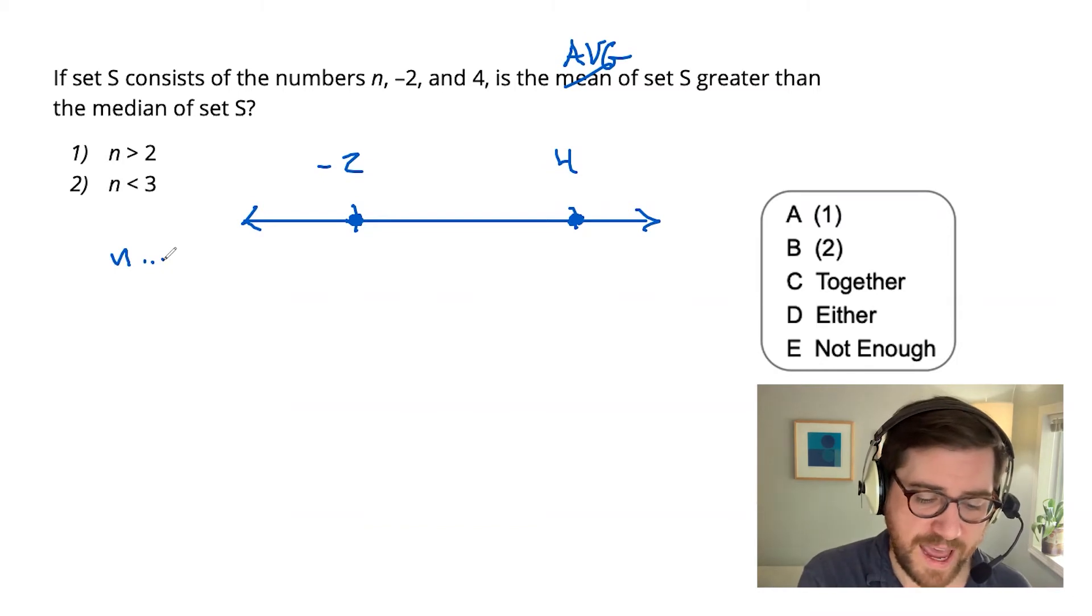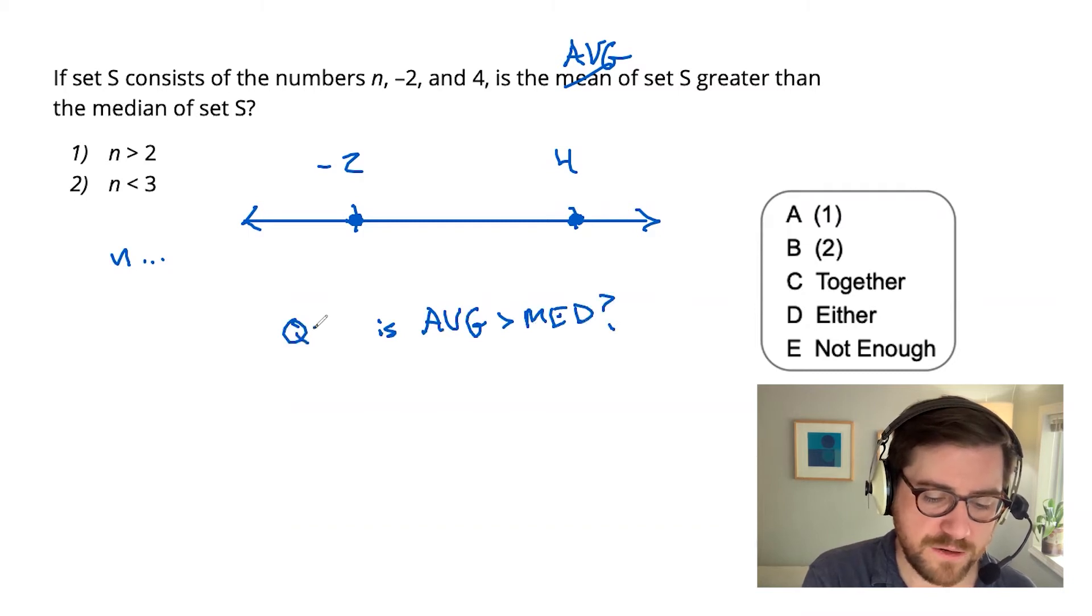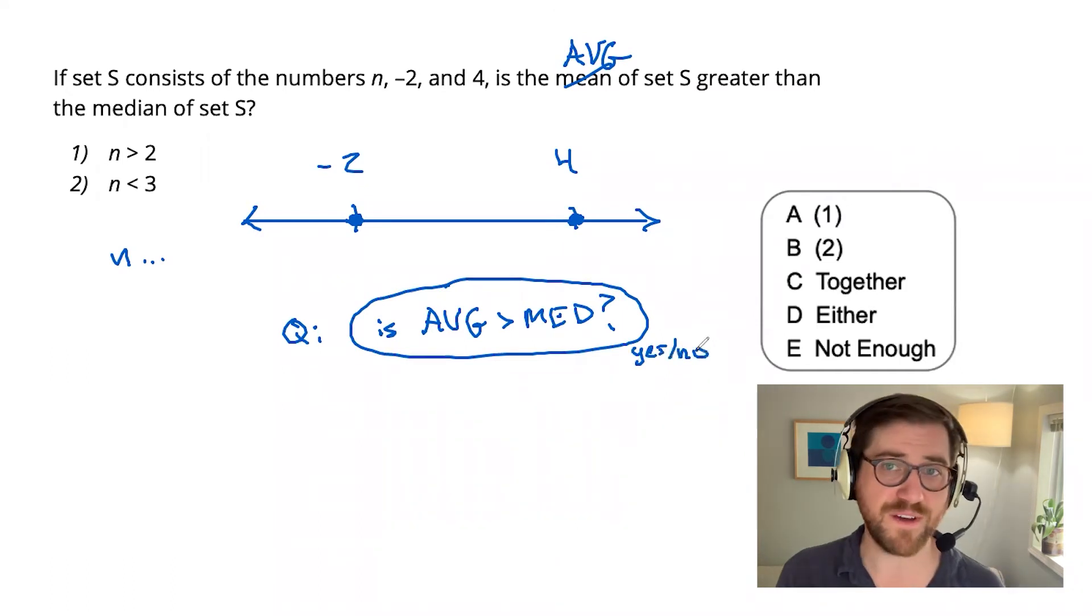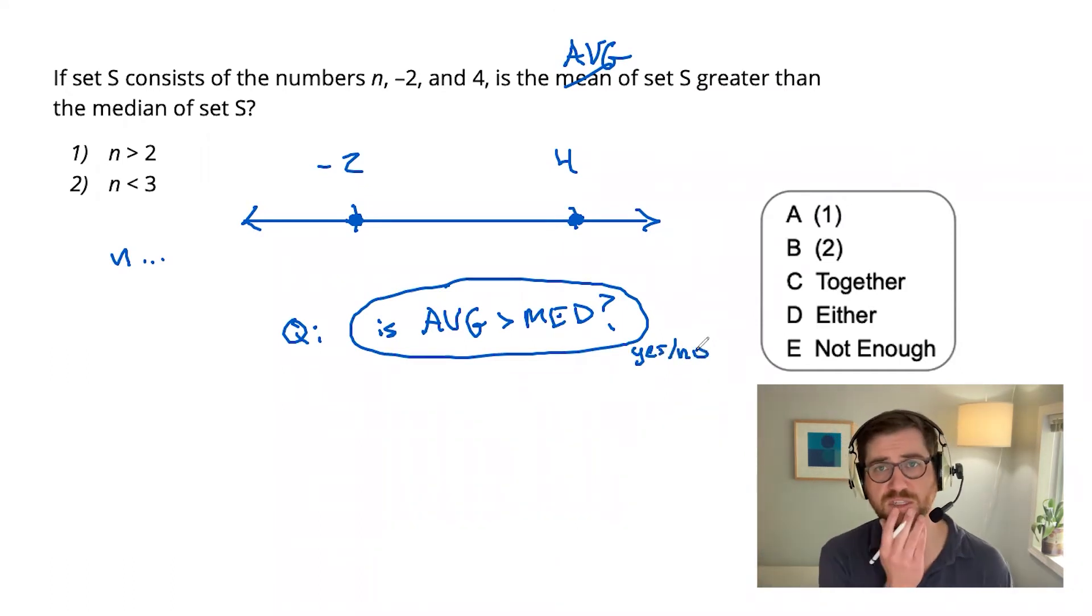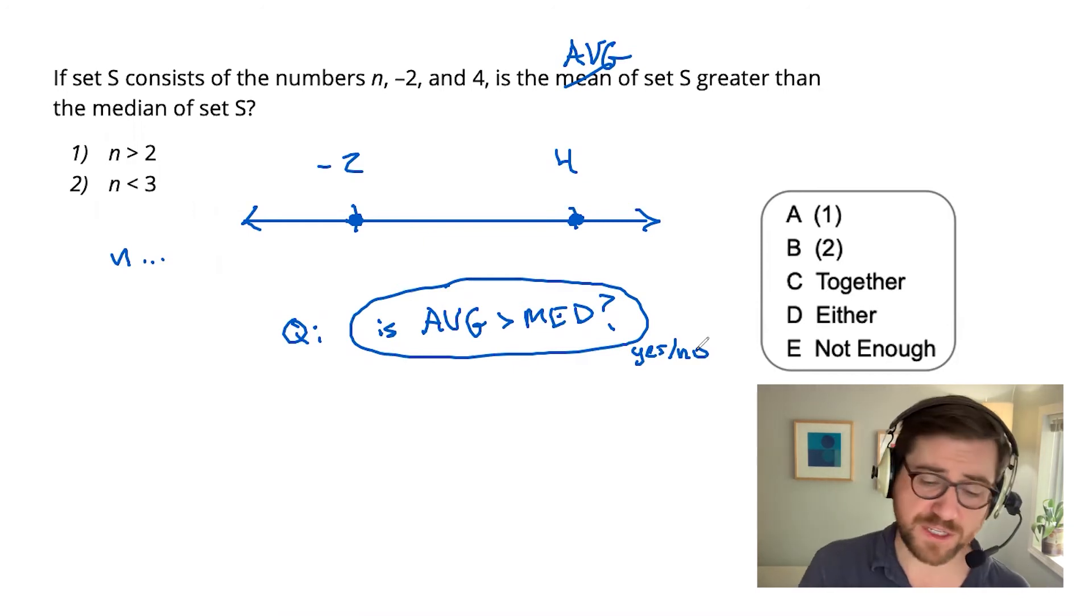What is the actual question asking? Is the average greater than the median? Let me jot that down so I don't lose sight of what I'm looking for. Is the average greater than the median? I'll label this as being the question. I'll circle it so I can reference it anytime I want. And I'll jot down a little yes, no to remind myself I'm not looking for a specific value here. I'm looking to answer this yes or no question. So what's interesting about this picture? Well, N right now could be anywhere. But I can see is it relates to the average and the median. There's kind of one really interesting place to put it. That would be right in the middle between these two given values.